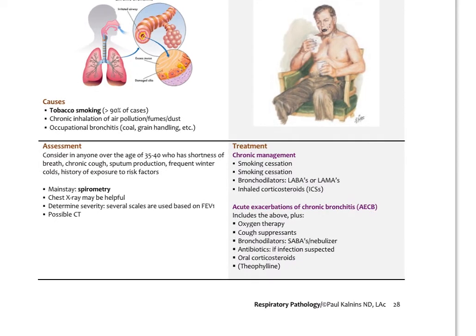Assessment should consider anyone over the age of 35 to 40 who has shortness of breath, chronic cough, sputum production, frequent winter colds, and history of exposure to risk factors. With asthma, you won't typically have the sputum production, though there can be crossover. Spirometry testing is very helpful here and is the mainstay of testing. Chest X-ray can be helpful. There are different severity scales based on FEV1 readings from spirometry. A possible CT scan would also be helpful.